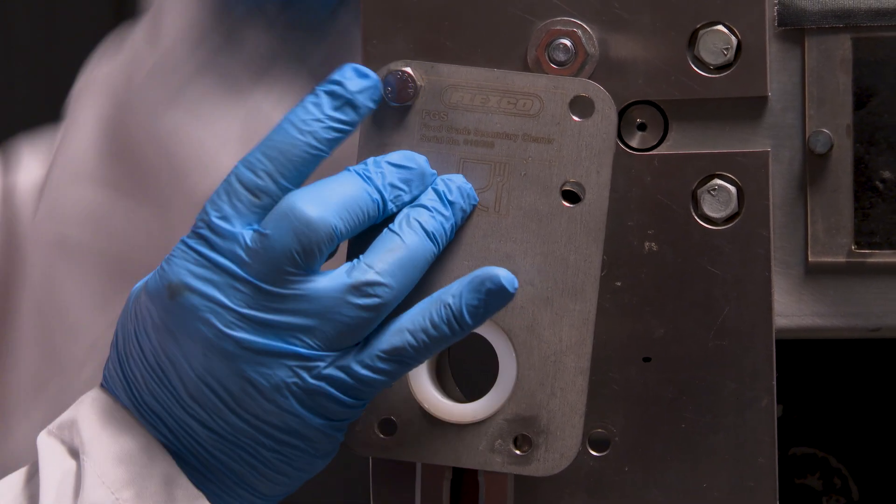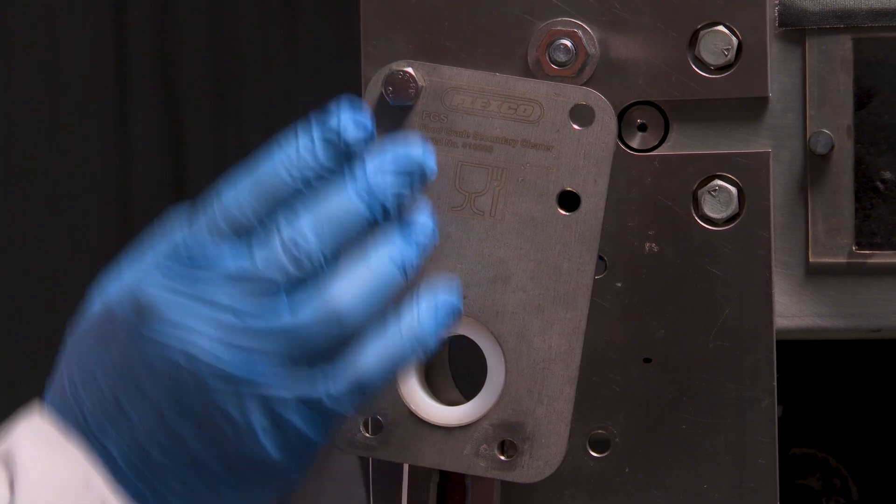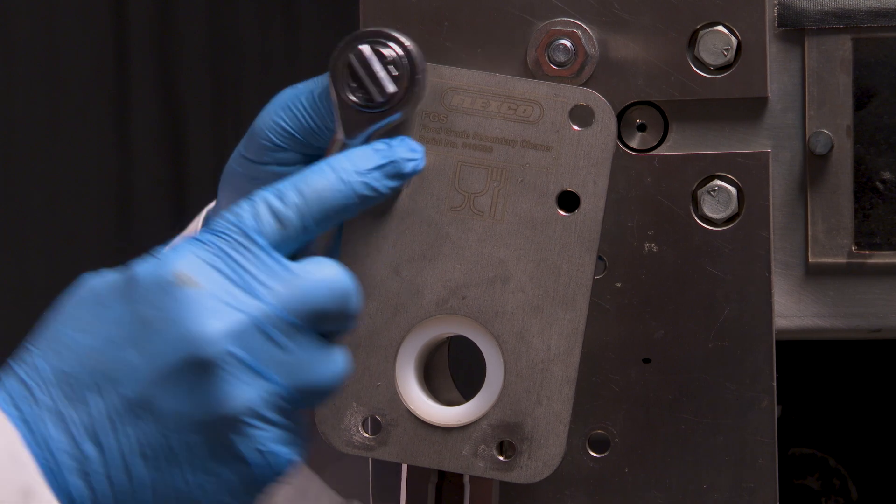Fasten the side plates and standoffs to each side of the conveyor structure. Use the 13mm hardware included in your kit.